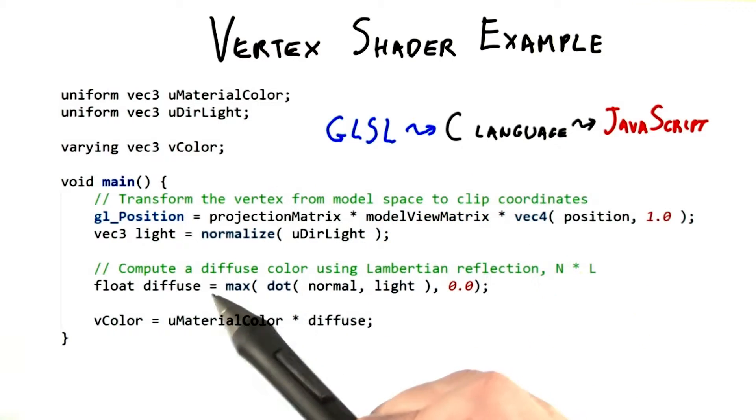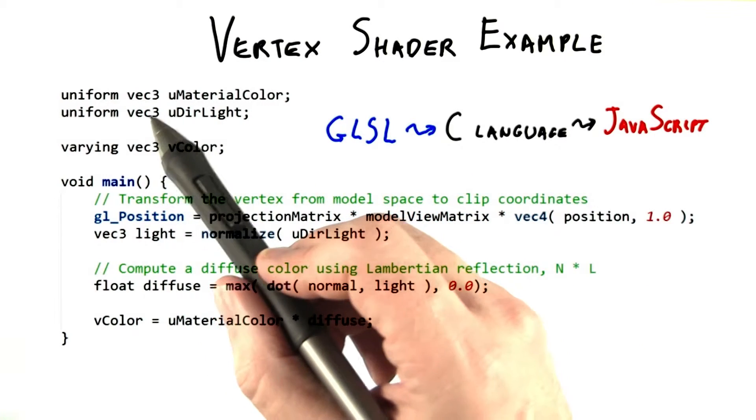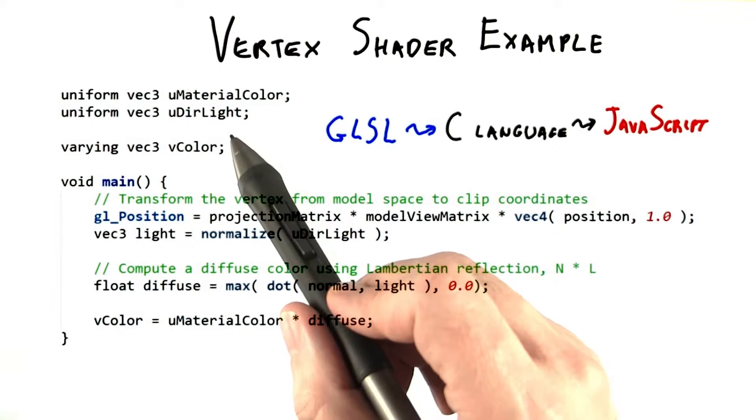This vertex shader computes the diffuse Lambertian lighting component at each vertex. At the top, you can see the material color defined as a uniform, as something the vertex shader uses as an input. Similarly, the lights direction is passed in as a uniform.